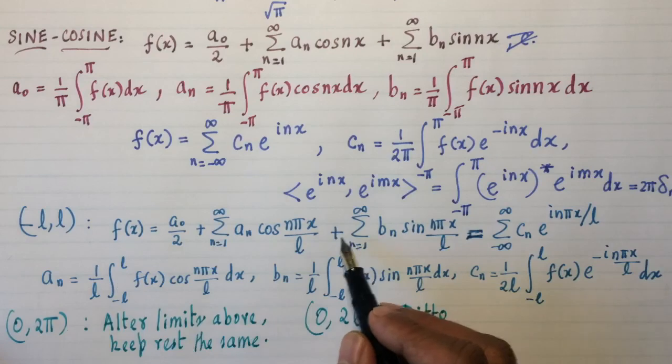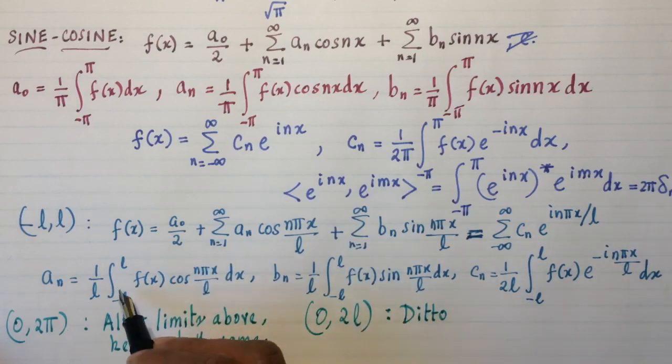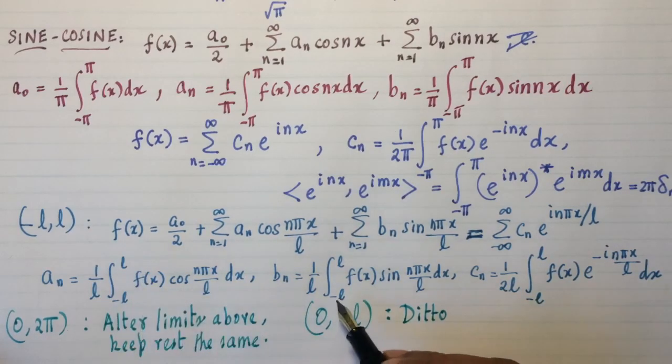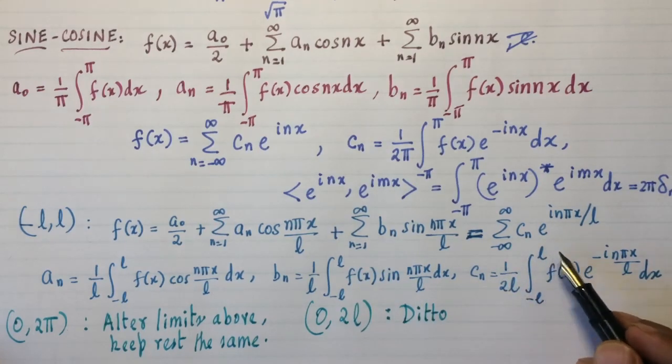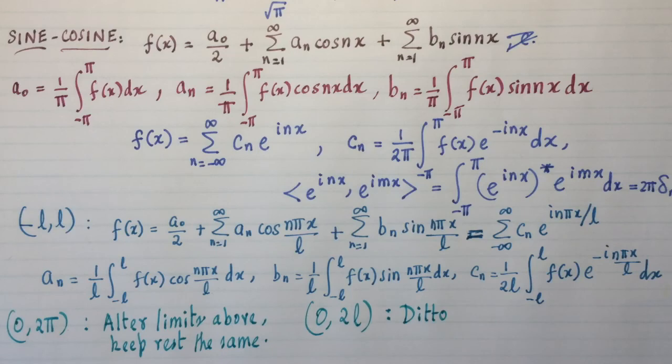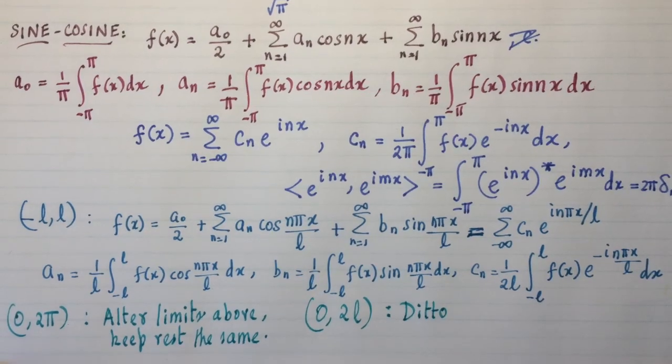You'll have, for example, what I mean by everything remains the same is this. a_n is gonna be 1/L, 0 to 2L, and b_n is gonna be 1/L, 0 to 2L, and c_n is gonna be 1/(2L), 0 to 2L. So that's the only change you're gonna make if you had intervals that don't sit symmetrically. Okay.